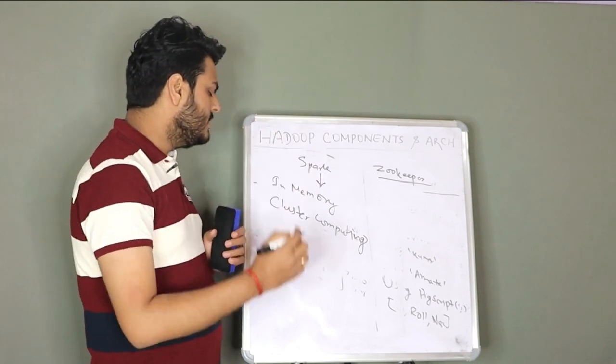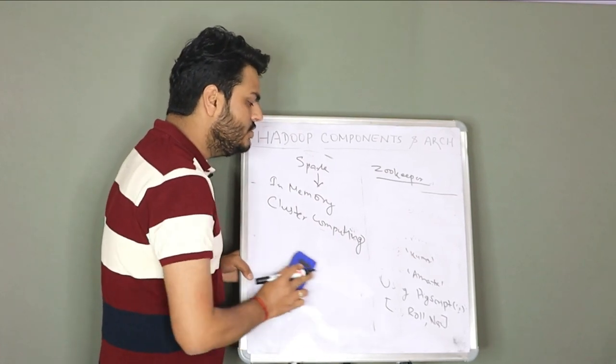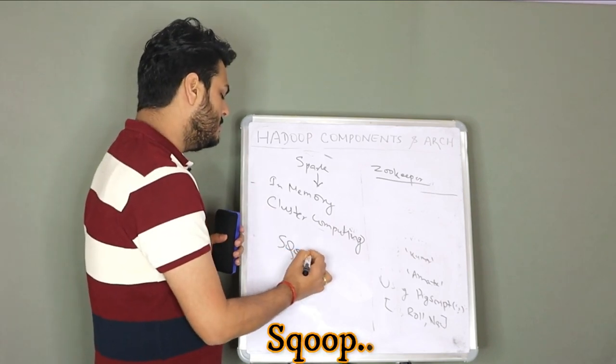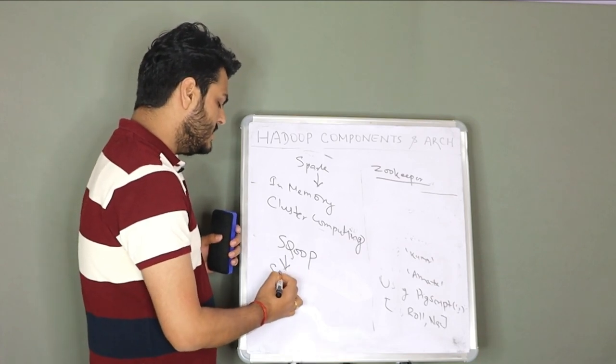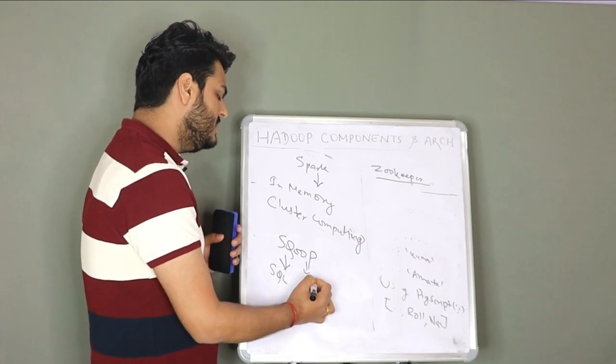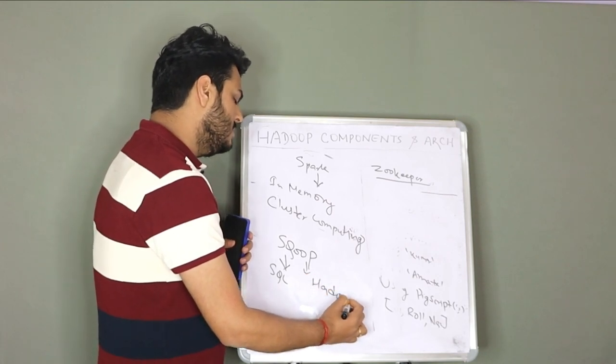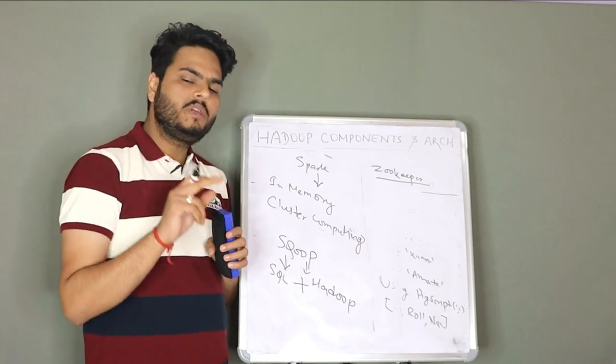And another component I was talking about in Hadoop ecosystem which you might use at times is known as Scoop, S-Q-O-O-P. In Scoop, S-Q stands for SQL and O-O-P stands for Hadoop. SQL plus Hadoop is equal to Scoop.